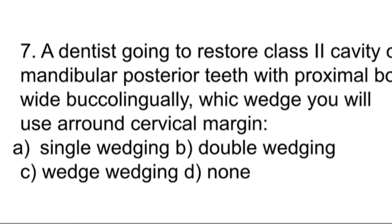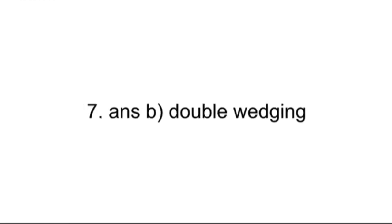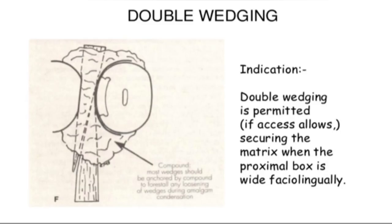Let's discuss the wedging techniques. In case of a proximal box wide buccolingually, you use double wedging. Double wedging means two wedges are used — one buccally and one lingually. Double wedging is used for securing the matrix when the proximal box is wide faciolingually.